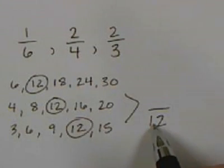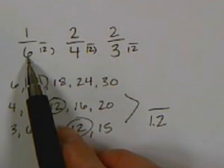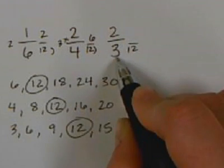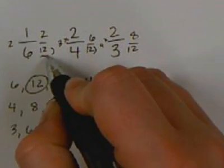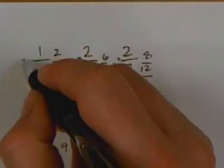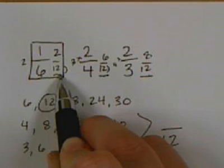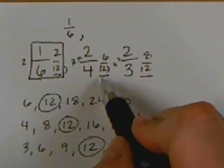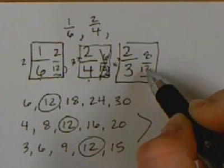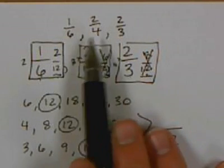So our new denominator is going to be 12. We divide in the basement and multiply in the attic to find our numerators. 12 divided by 6 is 2; 2 times 1 is 2. 12 divided by 4 is 3; 3 times 2 is 6. 12 divided by 3 is 4; 4 times 2 is 8. Our new fractions are 2 twelfths, 6 twelfths, and 8 twelfths. 2 twelfths is the smallest, so we write the original: 1 sixth. Next is 6 twelfths, so we write 2 fourths. Biggest is 8 twelfths, so we write 2 thirds. These fractions are in order from least to greatest: 1 sixth, 2 fourths, and 2 thirds.